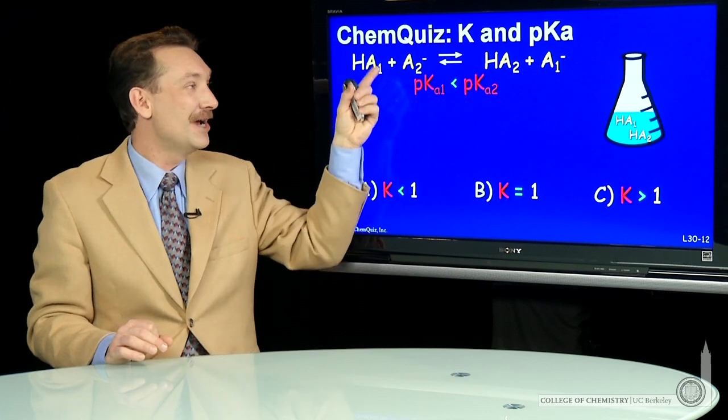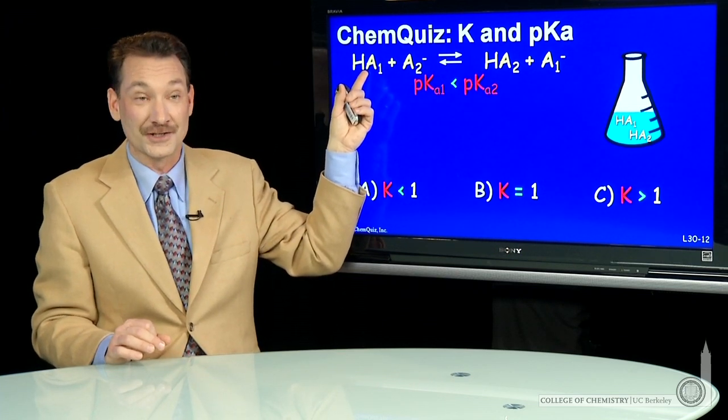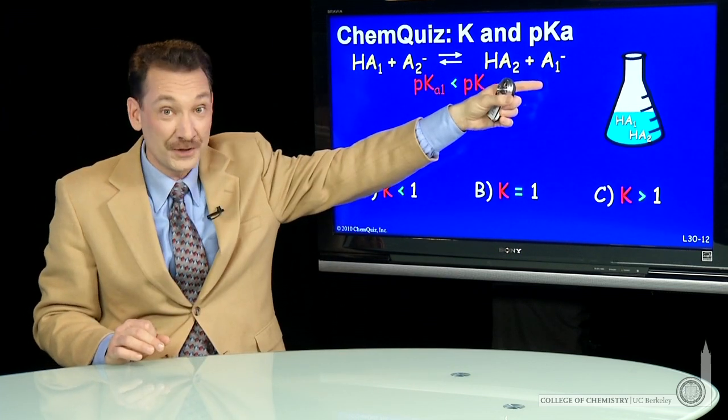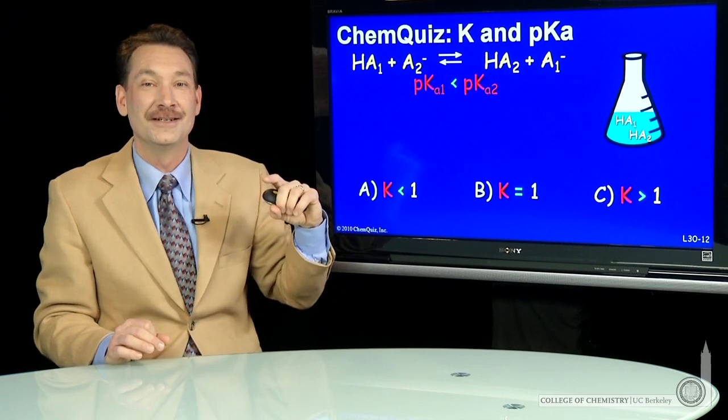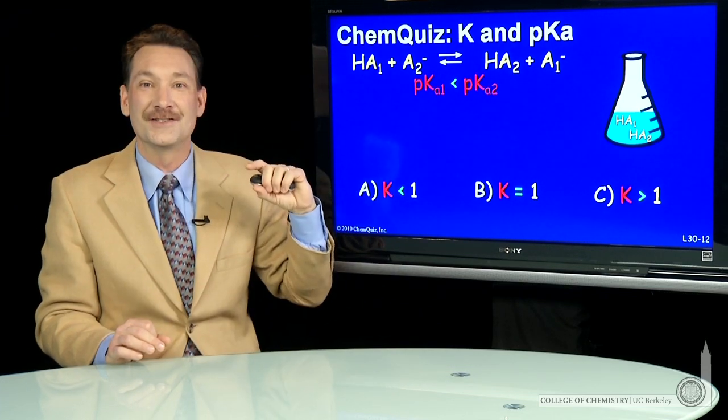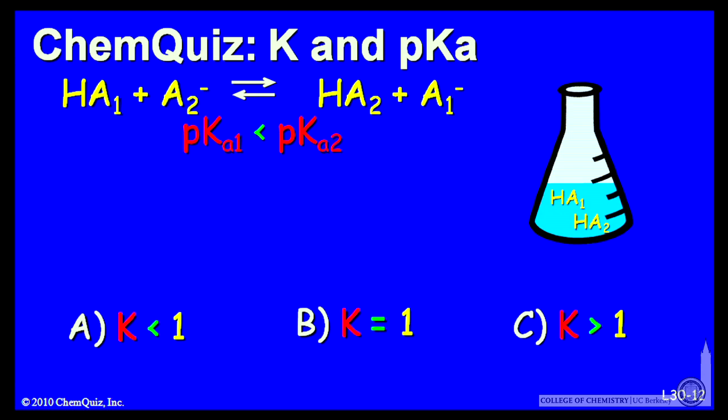So we should expect here that the reactant concentrations, HA1, will force this in this direction because HA1 is the stronger acid. So force towards the products, a k bigger than 1. In this case, Ka1 larger than Ka2.